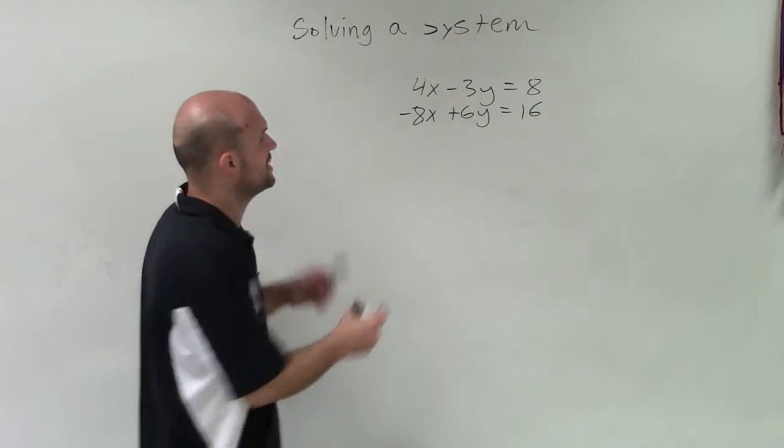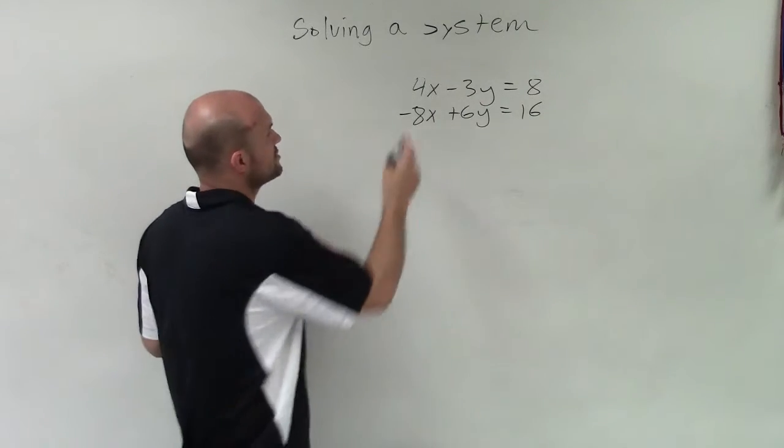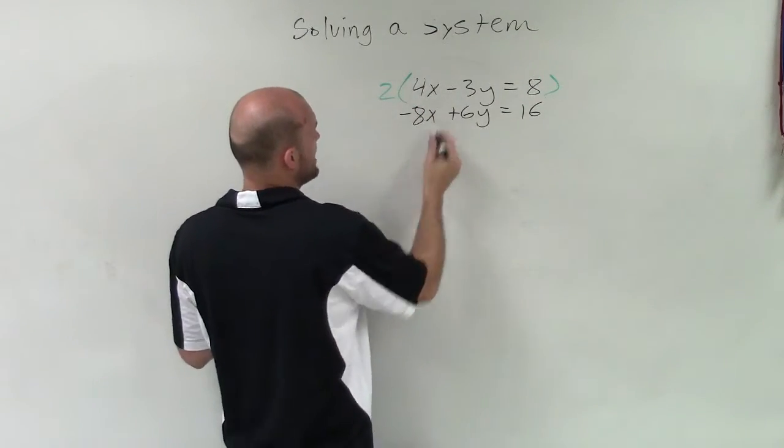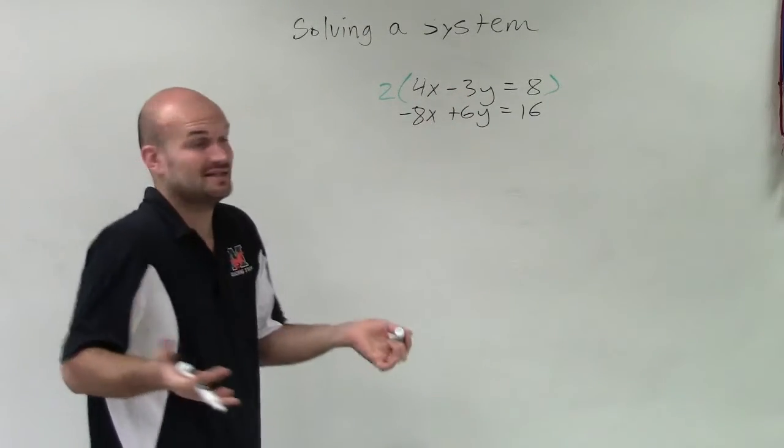So to apply elimination, I need to get the coefficient, regardless of the sign, to be exactly the same. So what I notice is if I multiply my top equation by 2, what I'll have now is the coefficients of the x and of the y that are exactly the same.